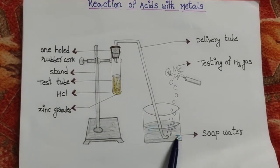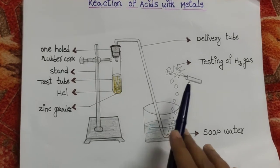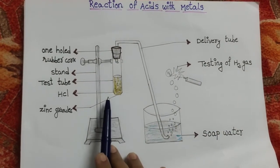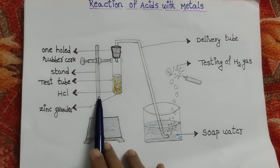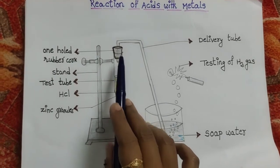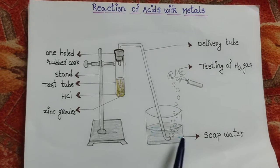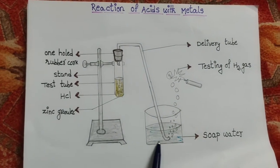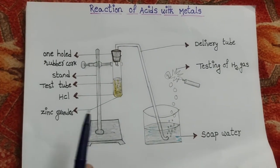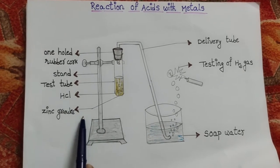The apparatus includes a stand, a test tube with one hole to fix the tube, a rubber cork, a delivery tube, a glass wool plug, and finally the chemicals HCl and zinc.